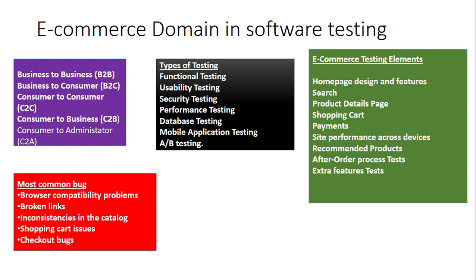Now let's look at the types of testing done on an e-commerce website or project — for example, Amazon, Flipkart, Myntra, or any other app. The different types of testing include functional testing, usability testing, security testing, performance testing, database testing, mobile application testing, and A/B testing.